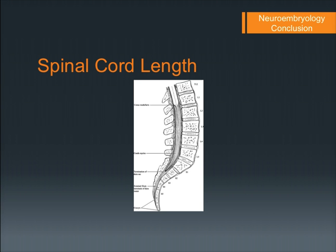A quick note on spinal cord length: the spinal cord itself ends at the conus medullaris, and below that is the dural sac containing individual nerves. The vertebral column grows down to the coccyx because the rate of growth of the vertebral column is much faster than that of the nerves.